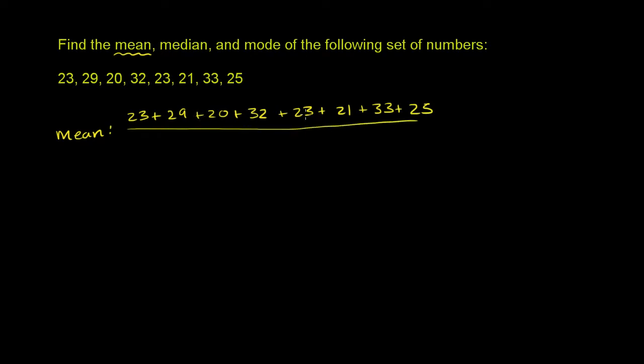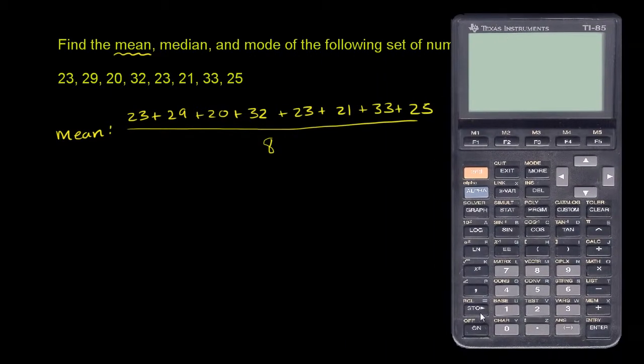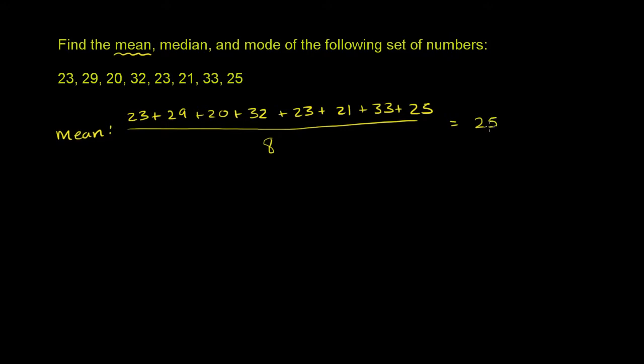And then divide that by the number of numbers. So 1, 2, 3, 4, 5, 6, 7, 8 numbers. So you want to divide that by 8. So let's figure out what that actually is. Actually, I'll just get the calculator out for this part. So we have 23 plus 29 plus 20 plus 32 plus 23 plus 21 plus 33 plus 25. So the sum of all the numbers is 206, and then we want to divide 206 by 8. So 206 divided by 8 gets us 25.75.